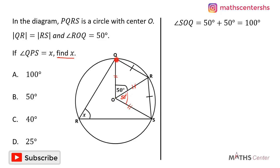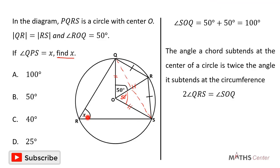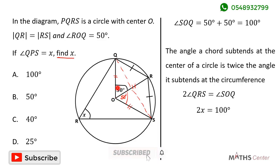We join point Q to point S to get chord QS. One of the theorems of a circle states that the angle a chord subtends at the center is twice the angle it subtends at the circumference. So the angle chord QS subtends at the center is two times the angle it subtends at the circumference. Angle QPS is X and angle QOS is 100 degrees.